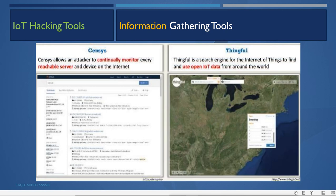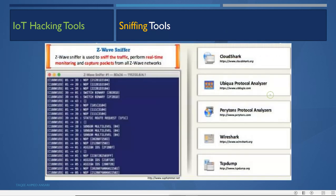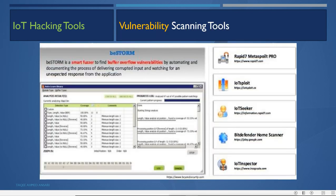Other information gathering tools include Censys, which continuously monitors all reachable servers and devices on the internet, and Thingful, a search engine for IoT open data worldwide. Sniffing tools include Z-Wave Sniffer for real-time monitoring and packet capture of Z-Wave networks, CloudShark, Ubiqua Protocol Analyzer, Pariton Protocol Analyzer, Wireshark, and tcpdump. Vulnerability scanning tools include BeSTORM for fuzzing buffer overflow vulnerabilities, Rapid7/Metasploit Pro, IoT Exploit, IoT Seeker, Bitdefender Home Scanner, and IoT Inspector.